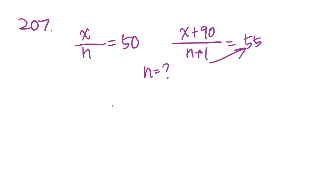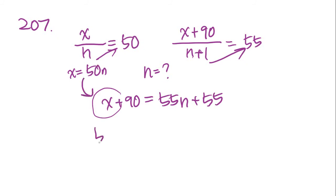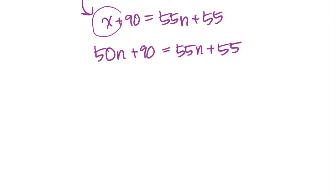Simple. Let's cross-multiply. We get X plus 90 equals 55N plus 55. Let's get rid of the X since we're solving for N. And we can do that by cross-multiplying here to get X equals 50N. Plug that into this second equation. What we end up with is 50N plus 90 equals 55N plus 55. Subtract 50N on both sides, and we get 5N. Subtract the 55, and we get 35. And then we simply divide by 5 to get N equals 7. And N equals 7 is answer E.